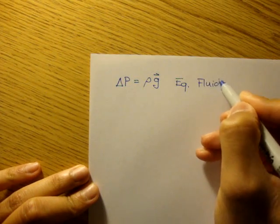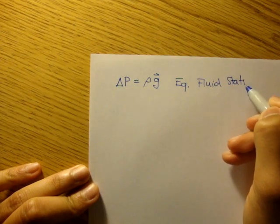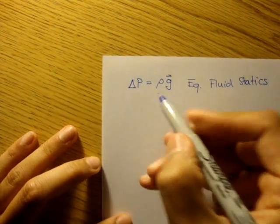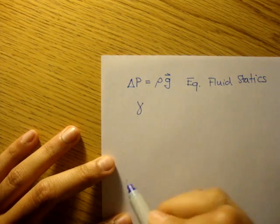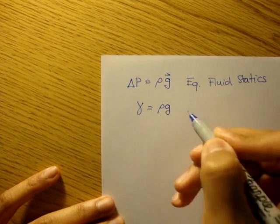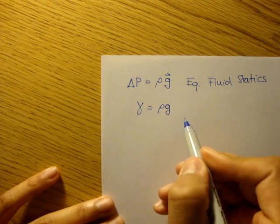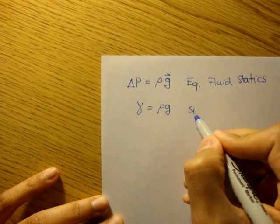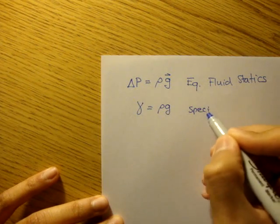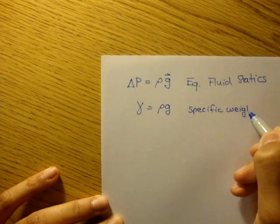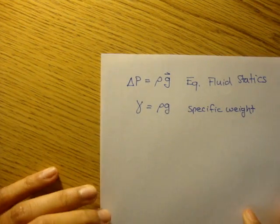Fluid statics. I'm going to define gamma, the Greek letter gamma, to be equal to rho g. Gamma in fluids is referred to as specific weight. That's what gamma is.